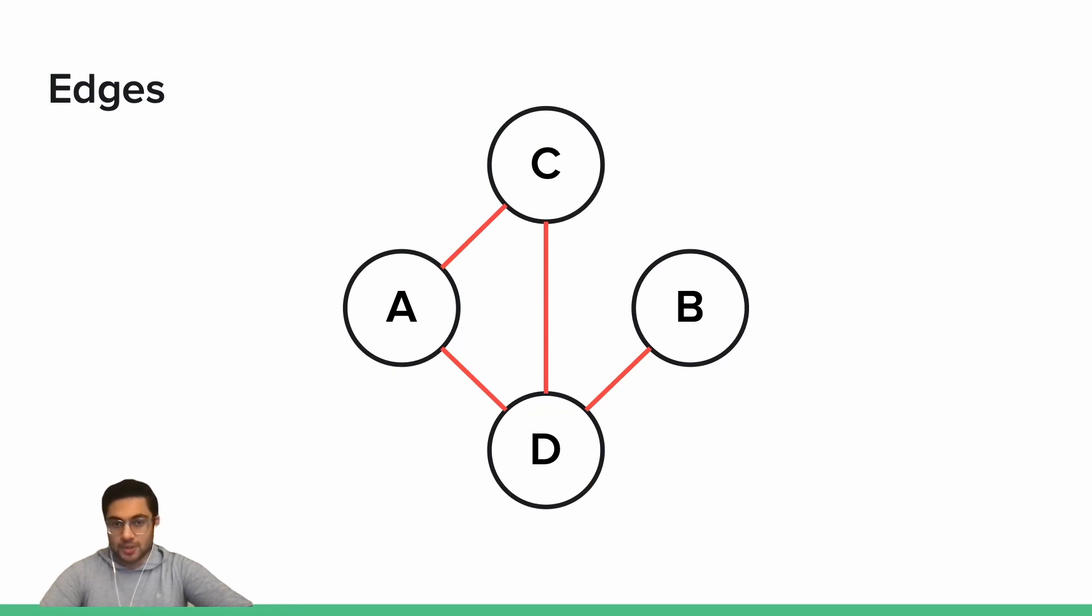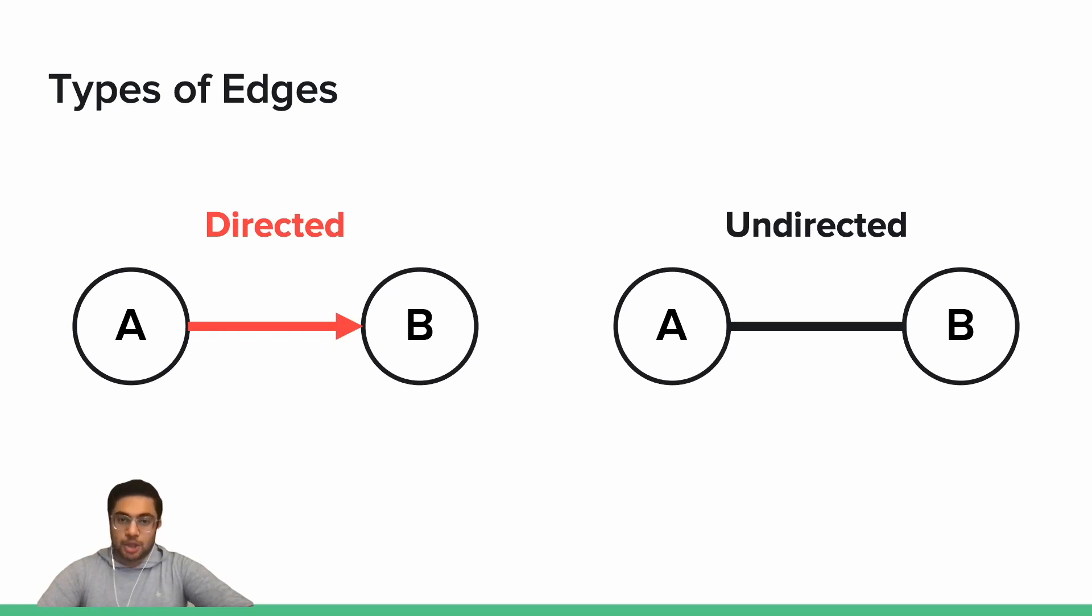There are two types of edges. A directed edge is valid in one direction with respect to the nodes it connects. For example, a directed edge from node A, the source node, to node B, the destination node, is only valid in the stated direction, from A to B, but not from B to A. Think of these like one-way streets.